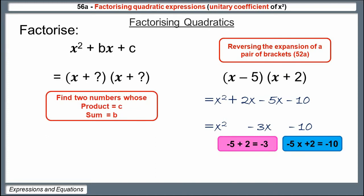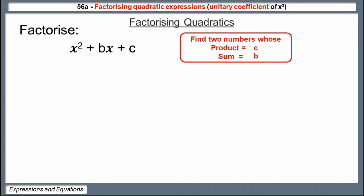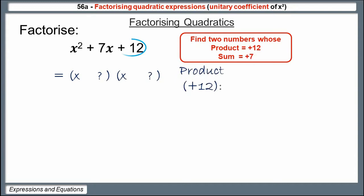To put that into practical terms, let's look at a proper example. We need to factorise x-squared plus 7x plus 12, so we need to find two numbers whose product is plus 12 and whose sum is plus 7. The factorisation will be a pair of brackets each with an x in. First, we list all pairs of numbers that multiply to make plus 12: that's plus 1 and plus 12, plus 2 and plus 6, and plus 3 and plus 4.